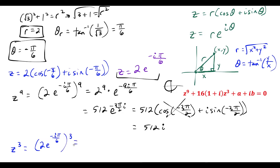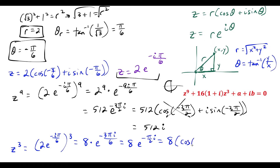For z to the third: (2e to the negative i pi over 6) to the third equals 2 to the third times e to the negative 3 pi i over 6. 2 to the third is 8, and raising a power to a power means multiplying exponents, giving 8e to the negative pi i over 2. Converting to polar form: 8 times cosine of negative pi over 2 plus i sine of negative pi over 2. Cosine of negative pi over 2 cancels to zero, and sine of negative pi over 2 equals negative 1, so z to the third equals negative 8i.